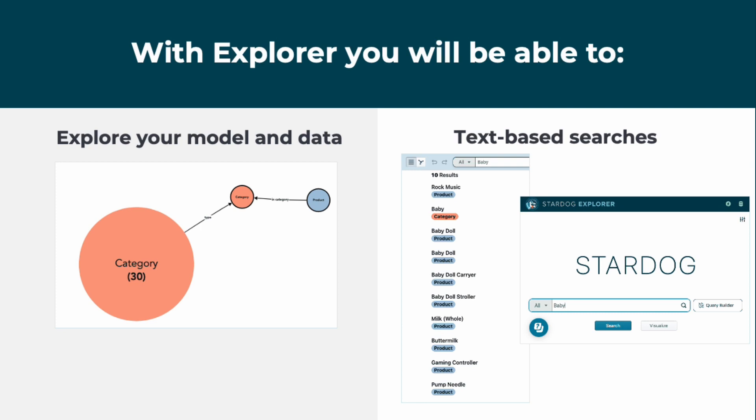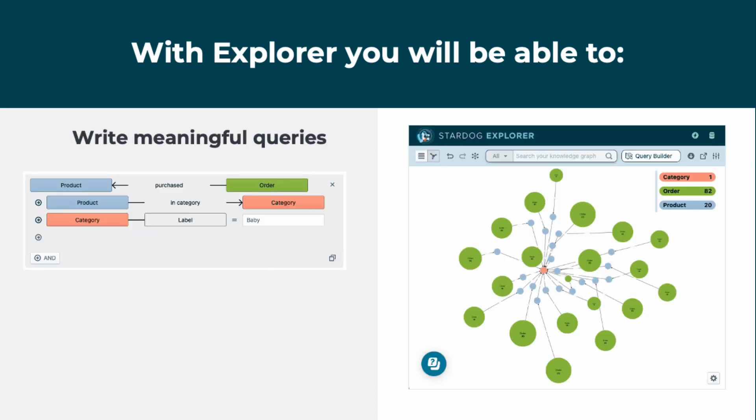Explorer also supports text-based searches, providing a quick way to find the data you're looking for. With Explorer's Query Builder, ask questions of your data visually without any specialized knowledge of a graph query language like SPARQL. The Query Builder provides an easy way to define your parameters, whether simple or complex. Review results either in a list or as a graph for further exploration.